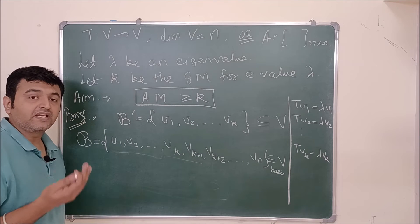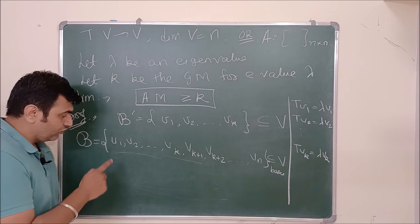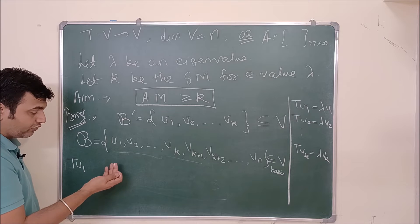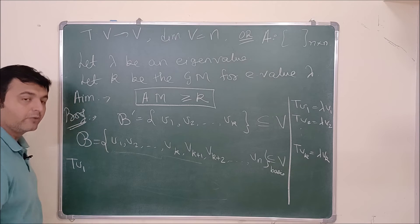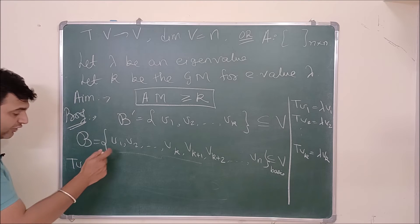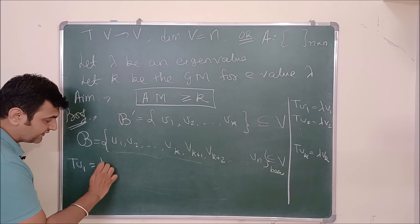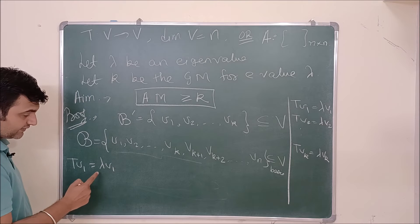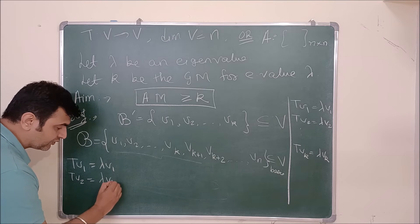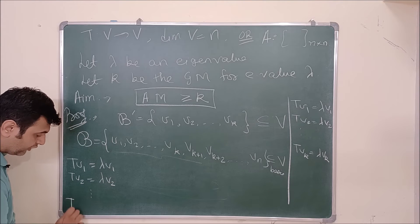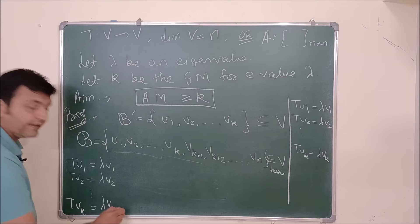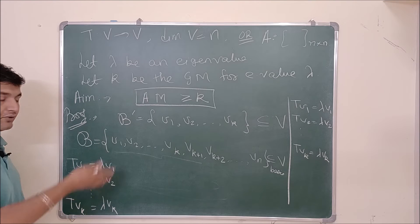Once we have a basis, we can form a matrix. We take each basis vector, look at its image under T, and write down the coefficients as a column vector. So T(v1) = λv1 because it's an eigenvector, T(v2) = λv2, and T(vk) = λvk. Let's write down the matrix explicitly to make this clear.